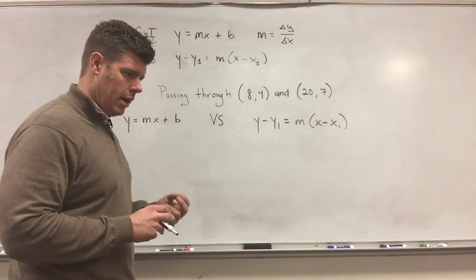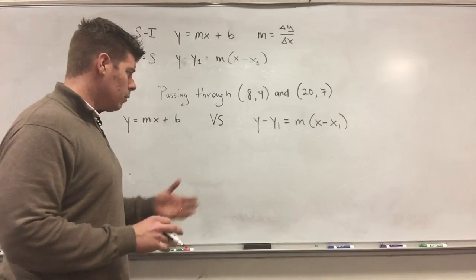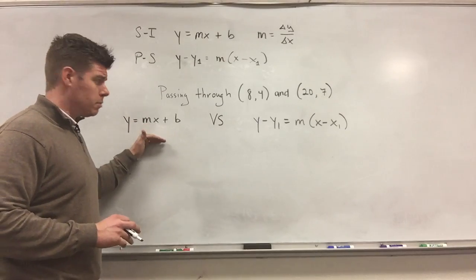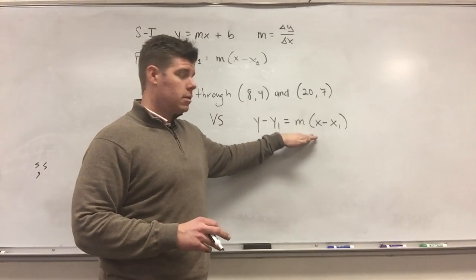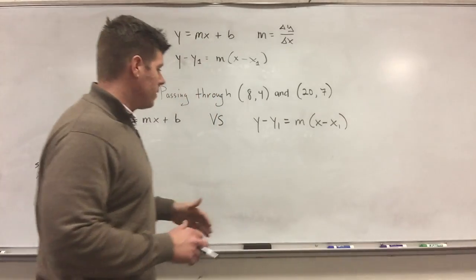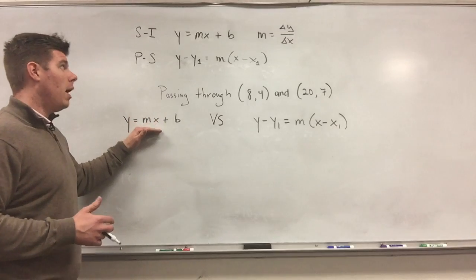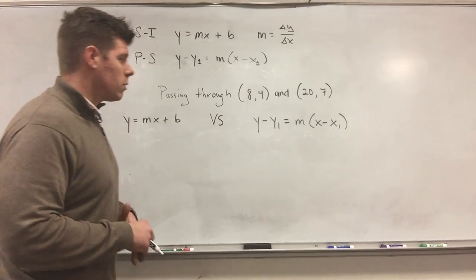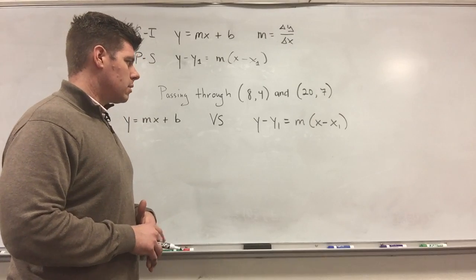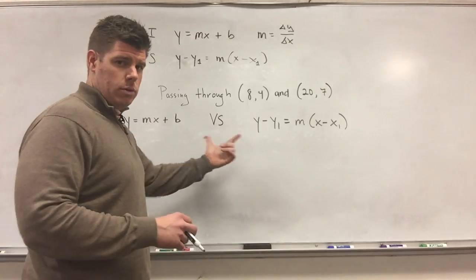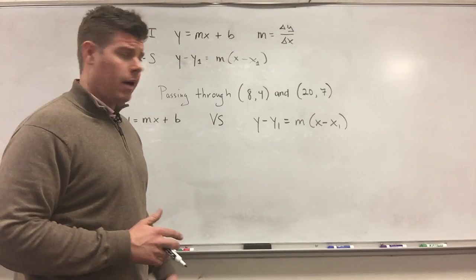So basically, there's going to be two ways you can essentially do this that I'm going to show for this video, and we're going to look at y equals mx plus b versus y minus y1 equals the slope times x minus x1. Now this is the point slope formula, and this is the slope intercept formula. These are just unique equations to linear functions.